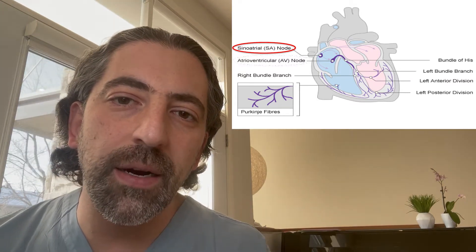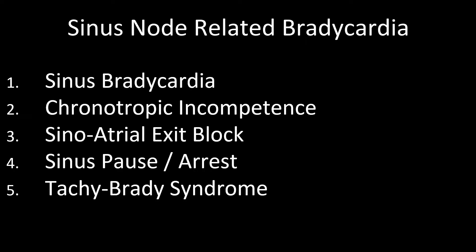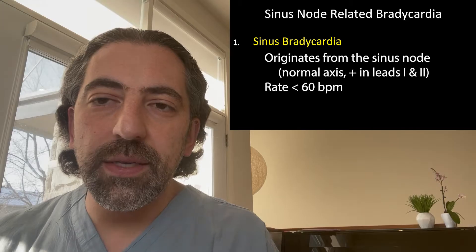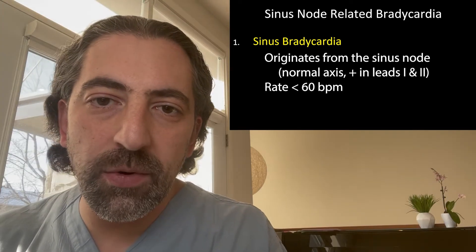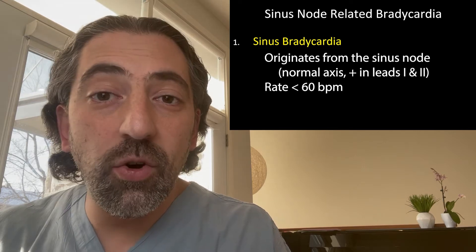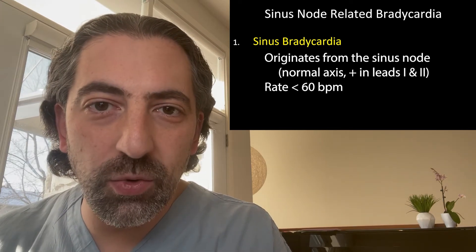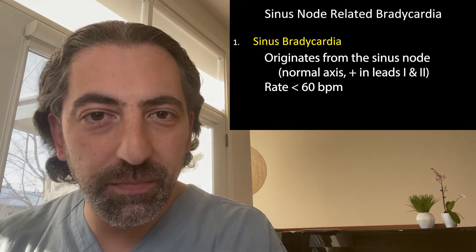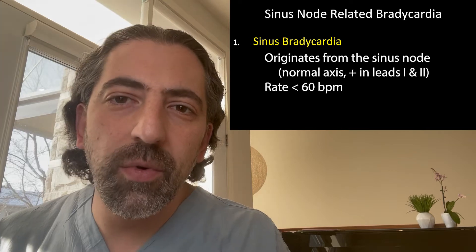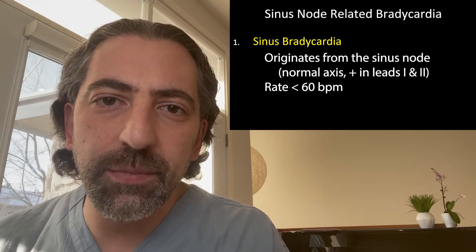There are multiple causes of bradycardia related to the sinus node: sinus bradycardia, chronotropic incompetence, sinoatrial exit block, sinus pause or arrest, or tachybrady syndrome. Sinus bradycardia is defined as a rhythm originating from the sinus node with a normal P-wave axis in leads 1 and 2, so the P-wave is positive in leads 1 and 2, with a rate of less than 60 beats per minute.